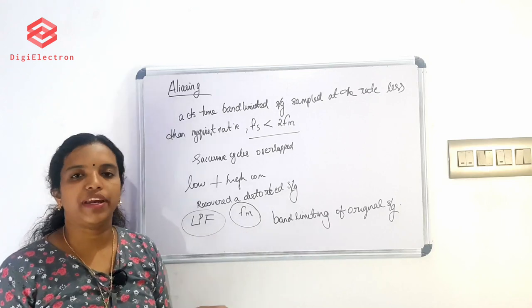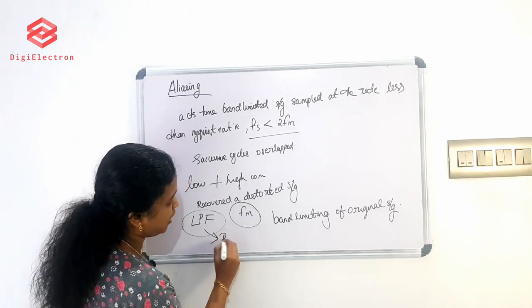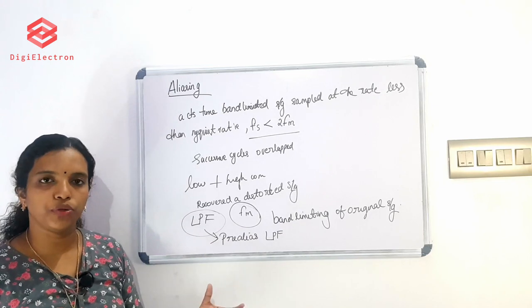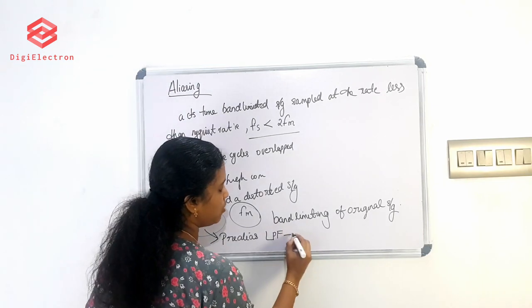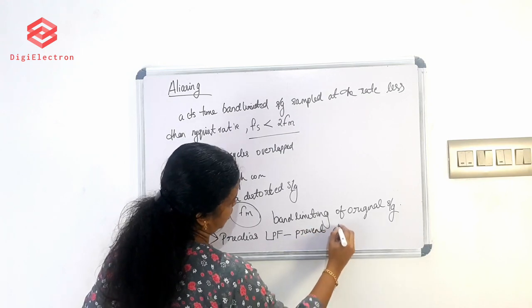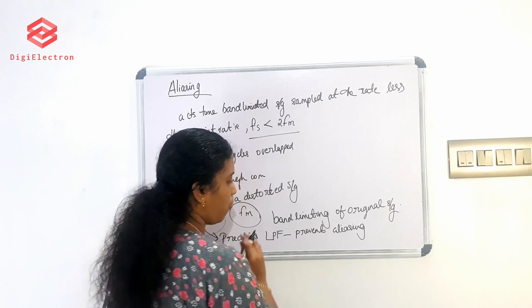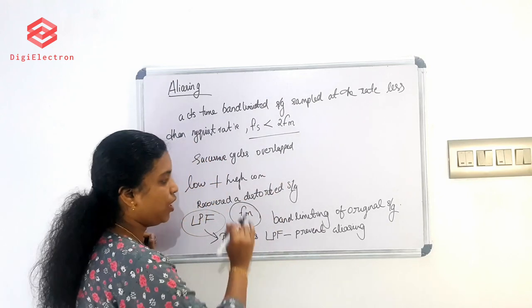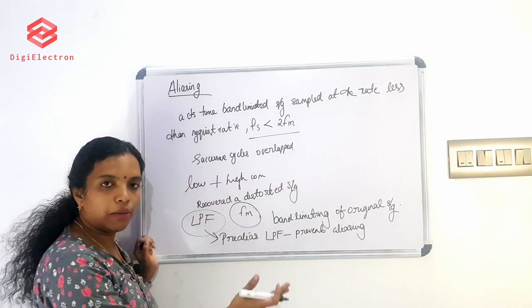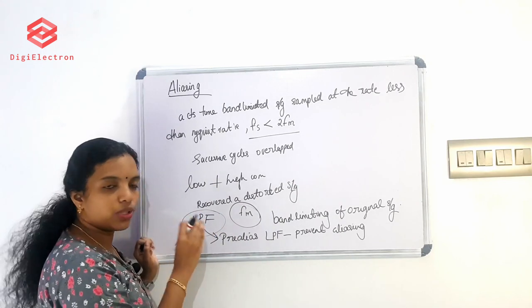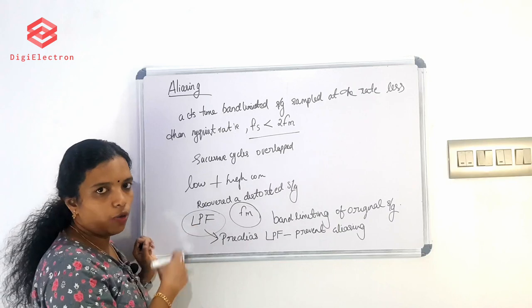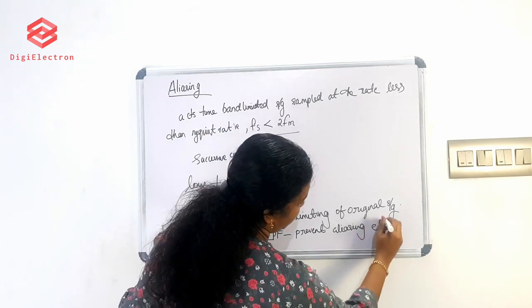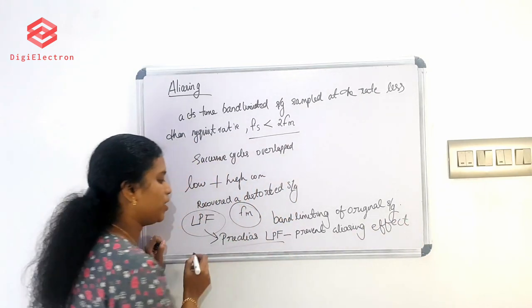This is called the pre-aliasing low-pass filter. It band-limits the original signal before sampling. The pre-aliasing filter rejects high frequency components above Fm, keeping only the low frequency content up to the cutoff frequency Fm. This prevents the aliasing effect. So the pre-aliasing low-pass filter is used on the information signal before sampling to prevent aliasing.